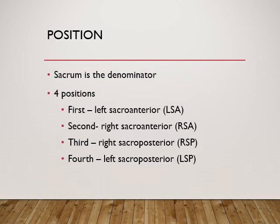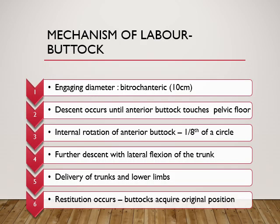In breech presentation, the sacrum is considered as the denominator. There are four positions: first is left sacro-anterior, second the right sacro-anterior, third right sacro-posterior, and the fourth is the left sacro-posterior. Now let us discuss the mechanism of labor in breech presentation.